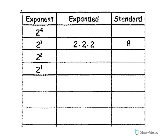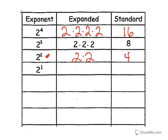Two to the fourth in expanded form means that I write it out four times, and when I do that math I would get 16. Two squared in expanded form — just write two twice — two times two is four. Two to the first power is just two written one time, and it's two.